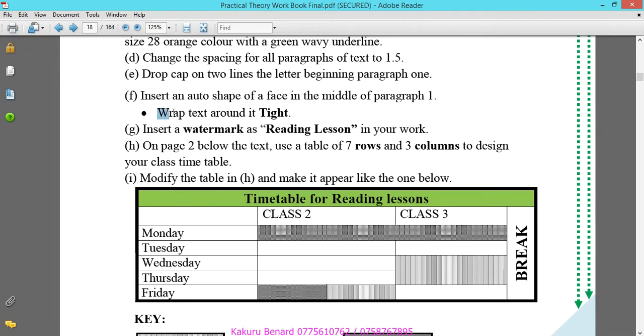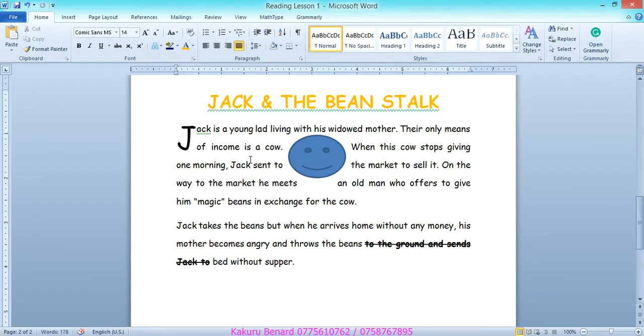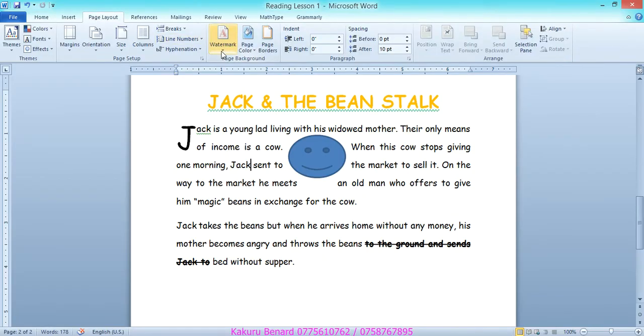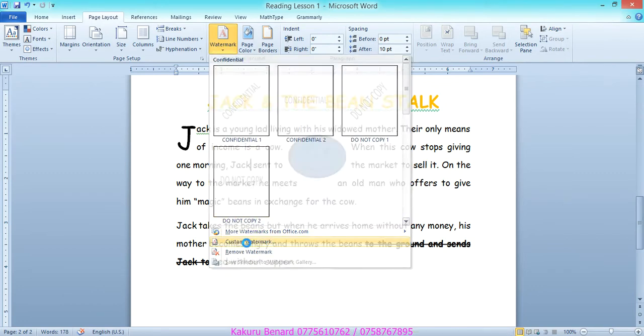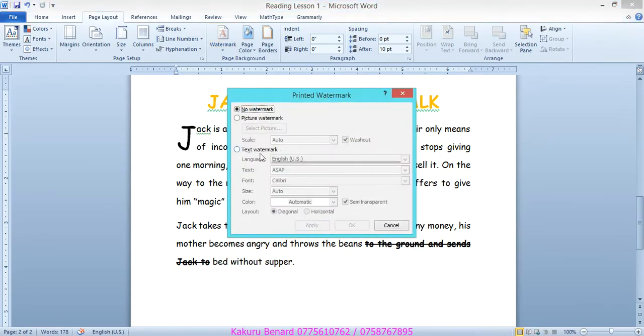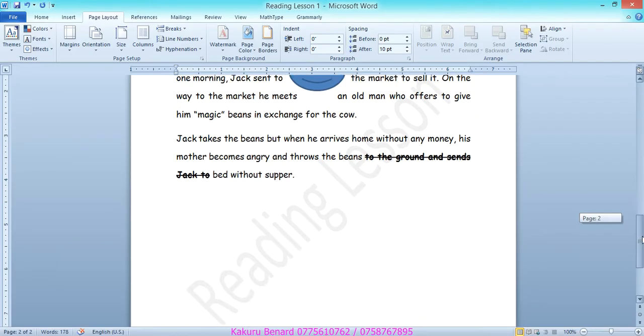Click on your shape, go to format and wrap text, click down arrow and choose tight. Next insert a watermark as reading lesson in your work. Click anywhere in your work, go to page layout, under watermark move down and choose custom watermark. Click text watermark, instead of the word ASAP put the word reading lesson, click OK. What you see behind is a watermark.